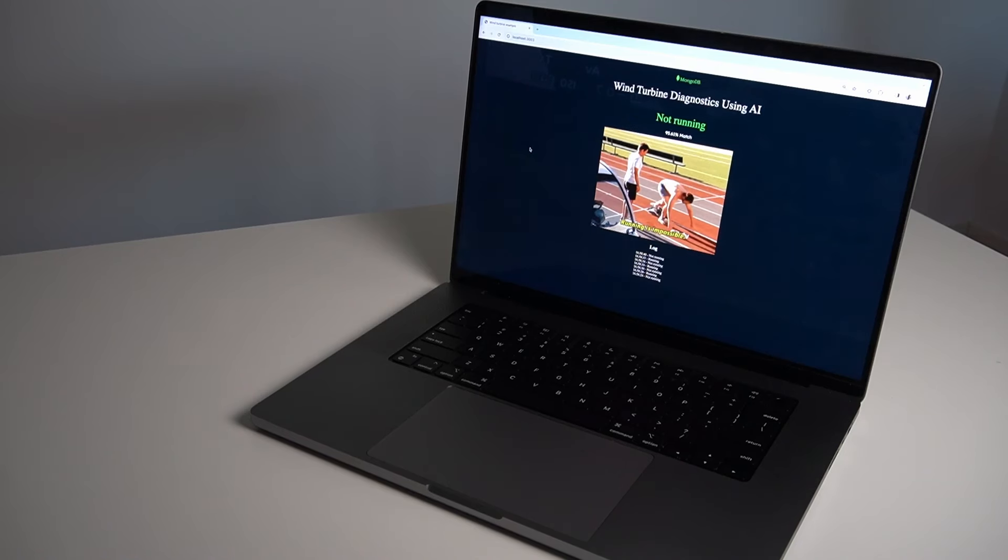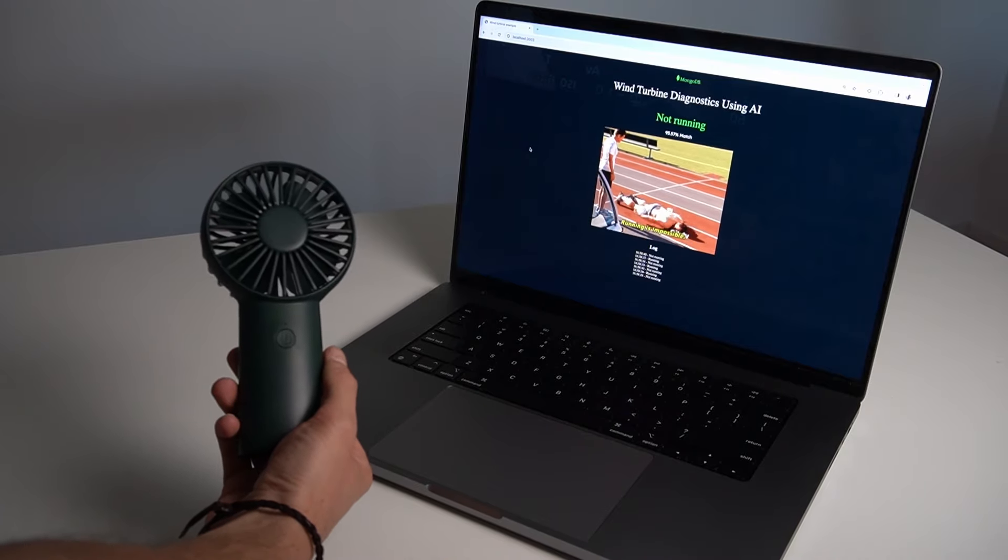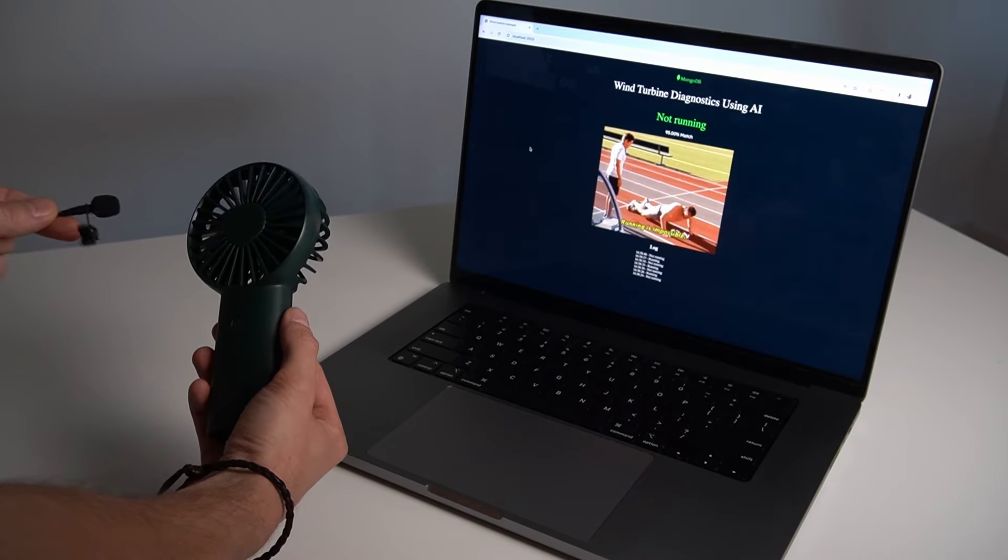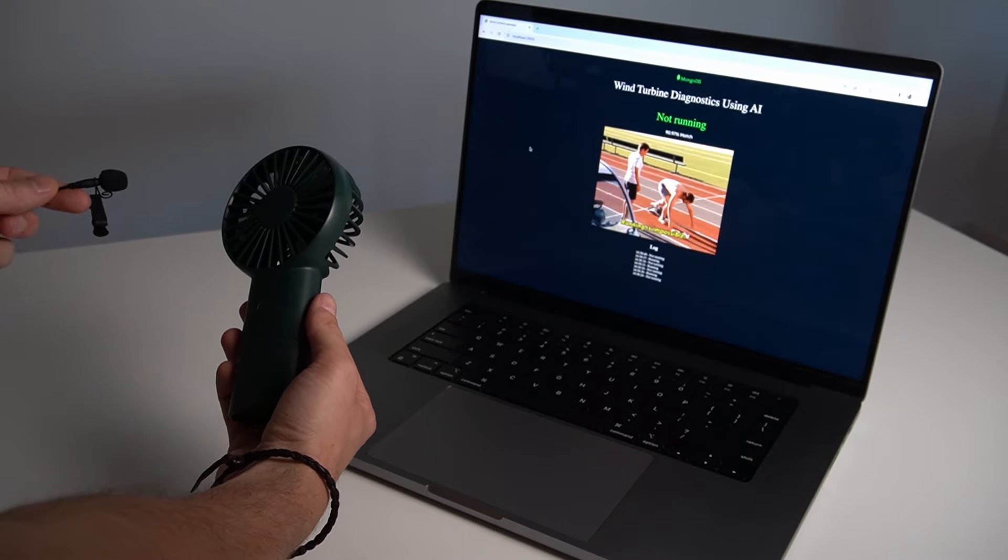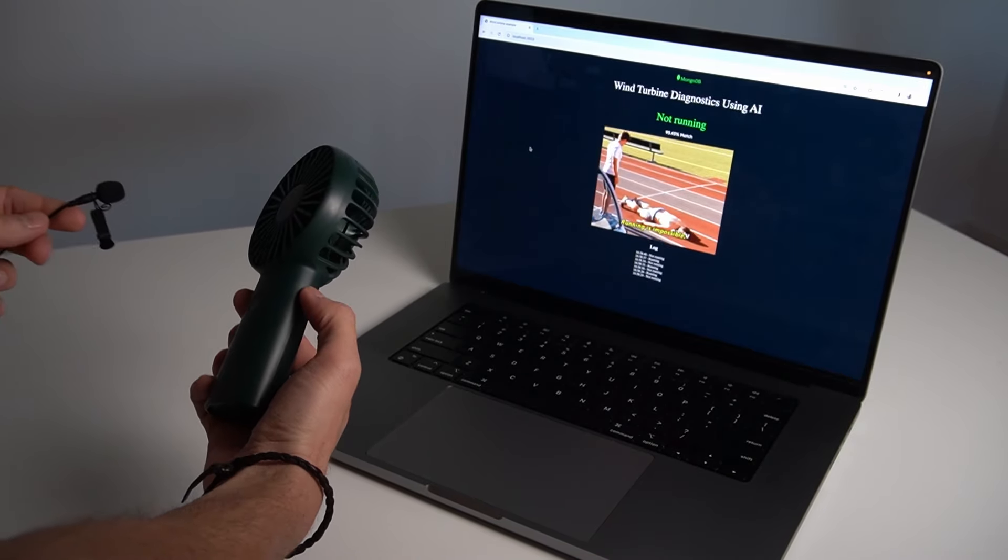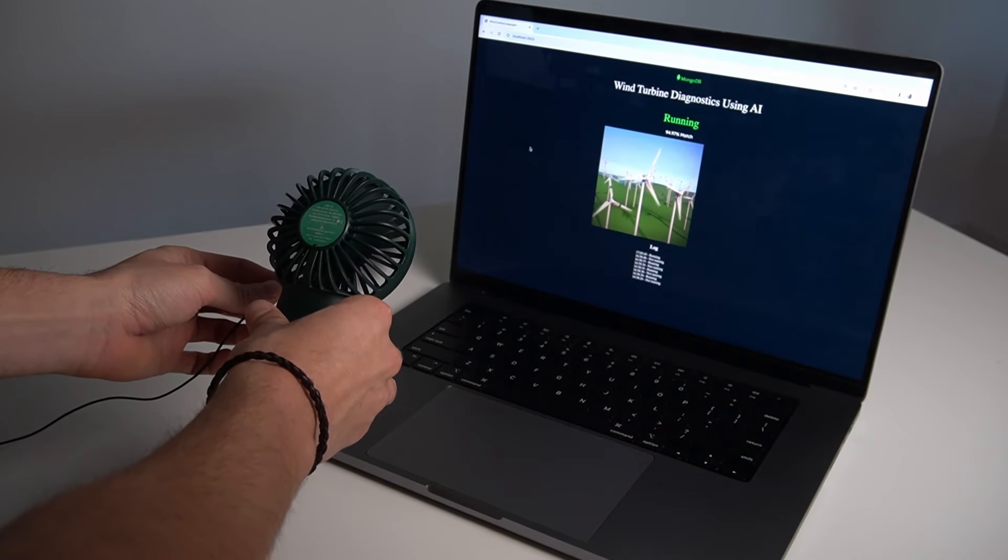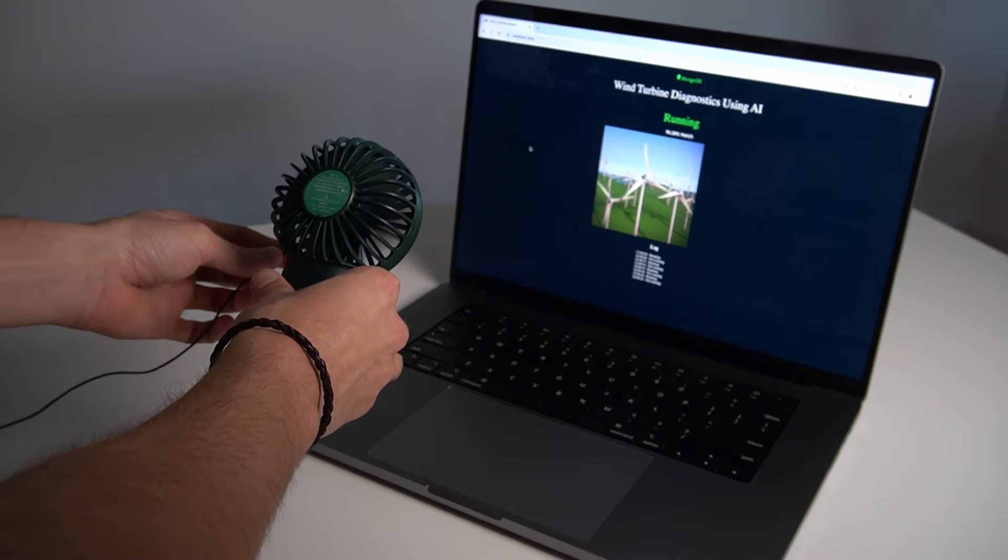In this demonstration, we'll utilize a handheld fan to simulate a wind turbine. I'll hold the microphone close to it to ensure accurate sound capture. Keep an eye out on the laptop screen where various GIFs will illustrate the fan's predicted status. Let's start by powering the fan on. Observe the screen as it displays the fan operating normally, indicated by its typical sound.